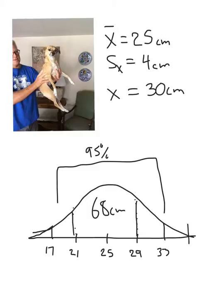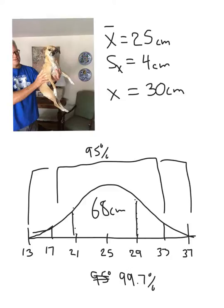And then if we go one more standard deviation, so we add another 4 to 33 over here, which is 37. And then down here, we're going to say, well, teeny tiny dog, which is 13 centimeters? That is a small dog. Okay, that pretty much gets all the dogs. 99.7 percent of the dogs are somewhere between 13 and 37.